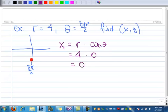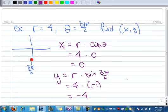4 times 0 is 0. And that's what you expected. It's right down there. And then the Y is going to be the R times the sine of 3 pi over 2. So that's going to be 4 times a negative 1, which gives me negative 4. So my X coordinates are 0, negative 4. And, like always, drawing this little mini picture here really helps confirm that you've done your arithmetic correctly. Let's do another example.